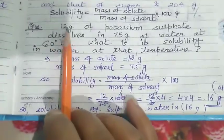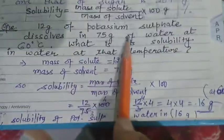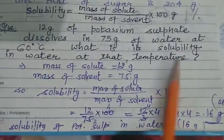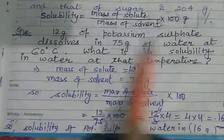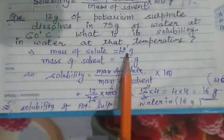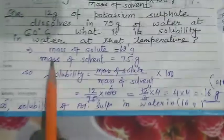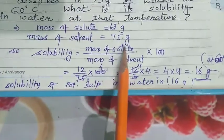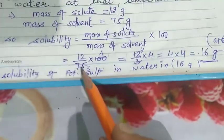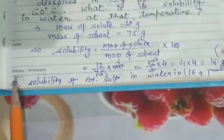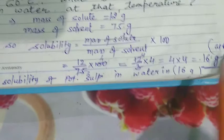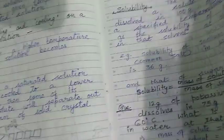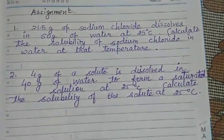Numerical: 12 grams of potassium sulfate dissolved in 75 grams of water at 60°C — what is its solubility? Potassium sulfate is the solute (mass = 12 g), water is the solvent (mass = 75 g). Solubility = (mass of solute / mass of solvent) × 100 = (12/75) × 100 = 16 grams. So the solubility of potassium sulfate in water at 60°C is 16 grams.